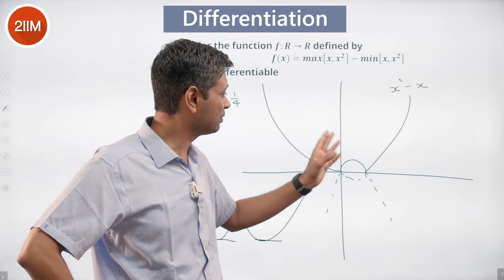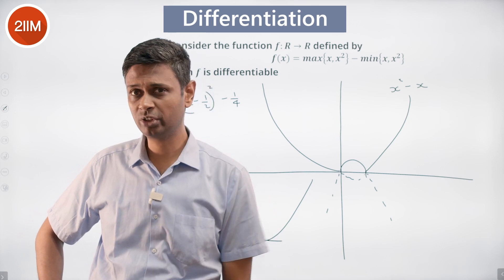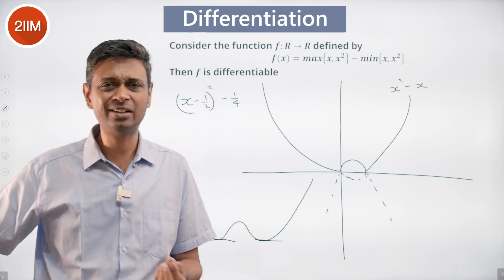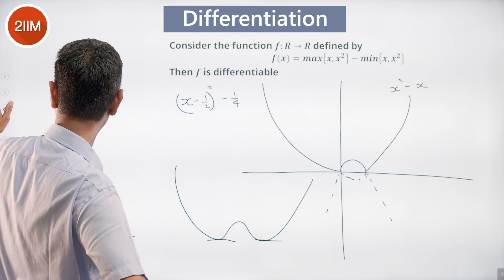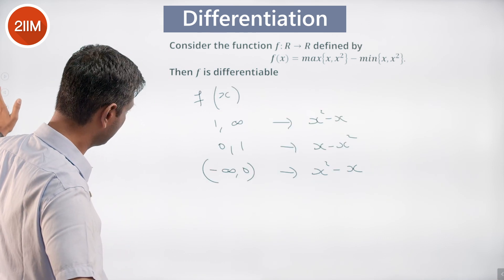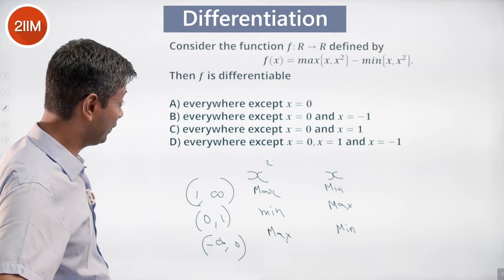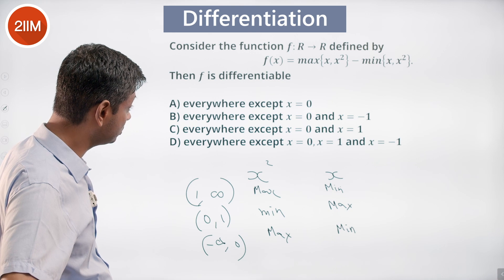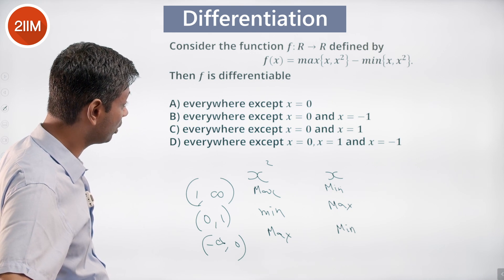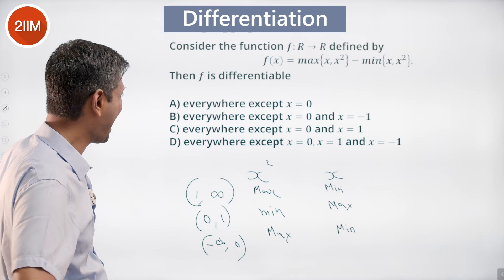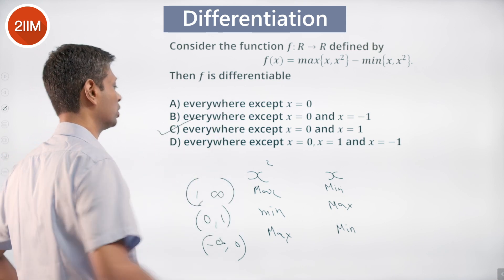It is differentiable in each piece — differentiable here, here, and here. Differentiability is in question only at x = 0 and x = 1. My gut feel is that it is not differentiable at either place. So the answer is: it is differentiable everywhere except x = 0 and x = 1.